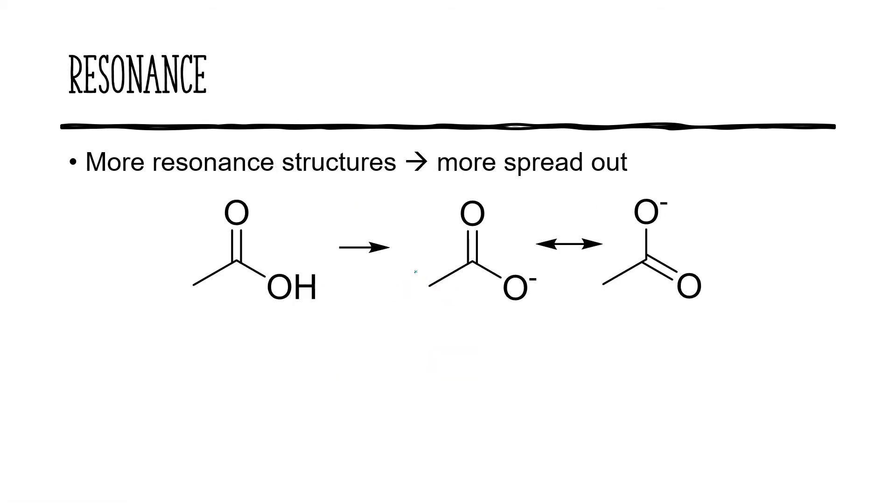More resonance structures means that the electrons are going to be more spread out. For example, with acetic acid, well, hopefully it's pretty clear we're going to be losing that proton when this thing acts as an acid. And that's going to leave us with a negative charge on this bottom right oxygen.